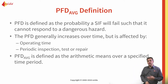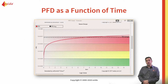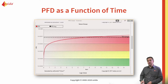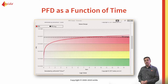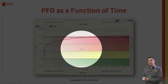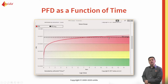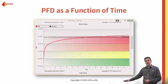The average PFD is defined as the arithmetic mean over a specific time interval. We can look at the probability of failure as a function of time — the red line shows PFD going up as a function of time. The black dotted line at the top represents our average probability of failure over the entire lifetime. This is a logarithmic scale; on a linear scale it would be a straight line, and the average would be roughly half.